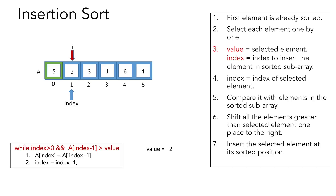For the first selected element, which is 2, we compare the value at index-1, which is 5. Since 5 is greater than 2, we copy the value at index-1 to index, so index 1 now has value 5. We then subtract 1 from index, so index now points to the first element. The condition index > 0 is now false, so the loop ends and we insert element 2 at the position pointed by index.